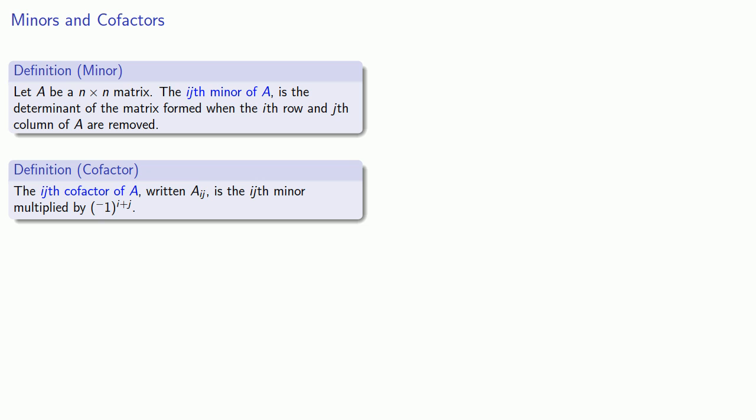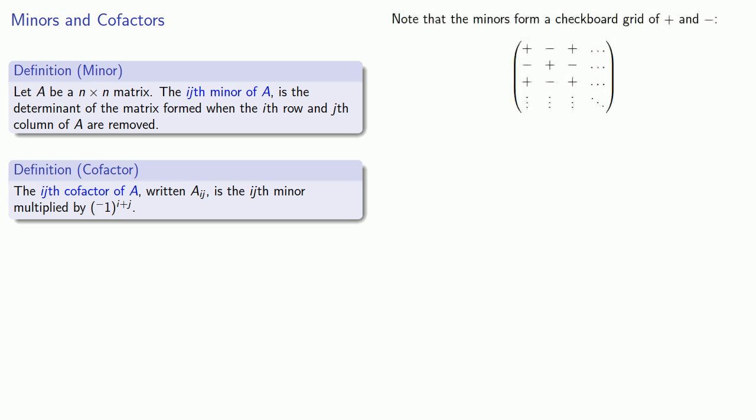This factor of negative 1 to the power i plus j is easy to remember. Since negative 1 to an even power equals positive 1, and negative 1 to an odd power equals negative 1, every time we shift over one column or move down one row, we change the sign. These powers form a checkerboard grid of plus and minus, and these signs are in addition to the sign of the matrix entry.